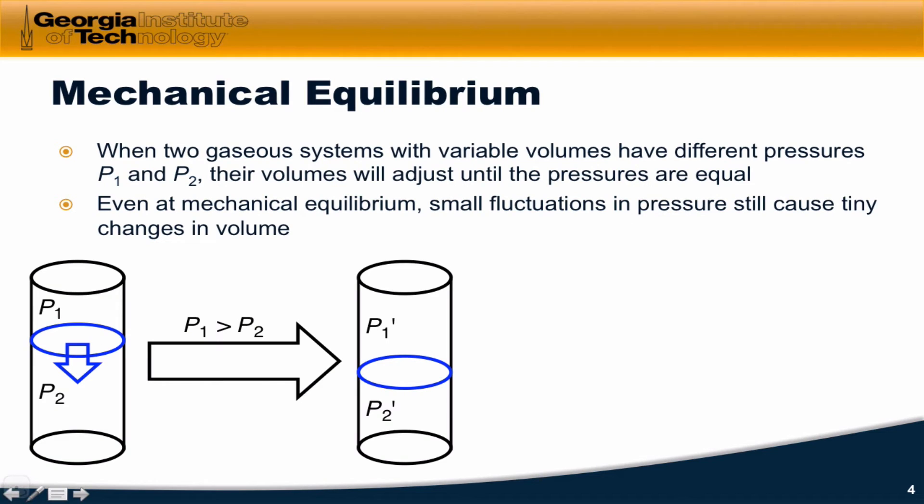So for example, there's mechanical equilibrium, where we can imagine two gaseous systems on either side of a movable piston here in blue. If P1 is greater than P2, such that there's a net downward force of the gas in the top chamber on the gas in the bottom chamber, then the piston will move downward spontaneously to a point where there are two new pressures.